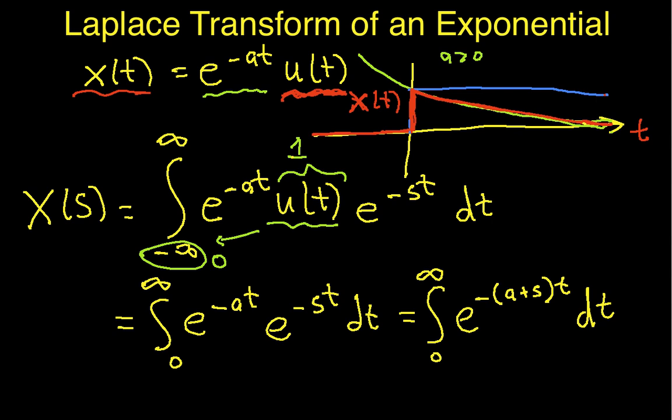So now, again, we're integrating with respect to t, so this minus (a plus s) is a constant. So this integral then becomes minus 1 over (a plus s), e to the minus (a plus s)t, evaluated at 0 and infinity.